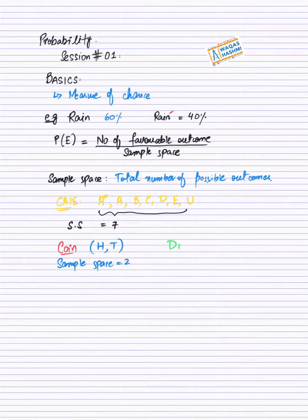Agar mein baat kerta hoon dice ki. I hope ki aapne ludo khela hota hai. Dice ka sample space kya hooga bhai? Dice aapne kiya, toh aapke paas 6 possible outcomes hai. Toh one aayega, two aayega, three aayega, four aayega, five aayega, six aayega. Toh meere paas sample space kya ho gya? Sample space ho jayega, meere paas six. Ke six possible outcomes hai.